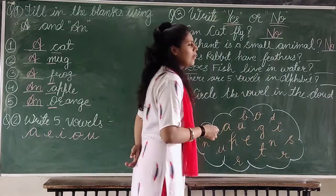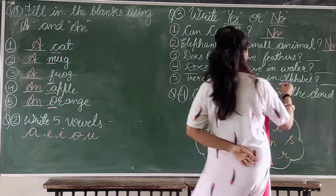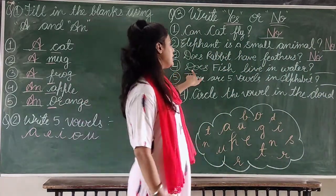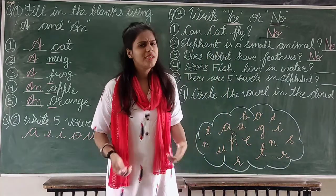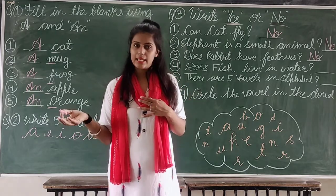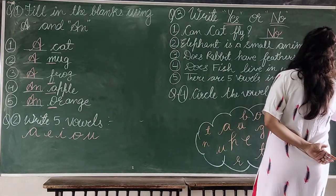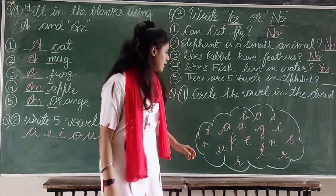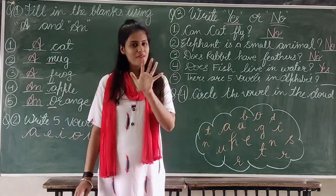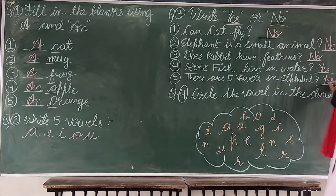Does a rabbit have feathers? Does a rabbit have feathers? No. So you have to write here: N-O, no. Now: is there fish in the water? Yes. So you have to write here: yes. Now: are there five vowels in the alphabet? Yes, there are five vowels. So we have to write yes here.